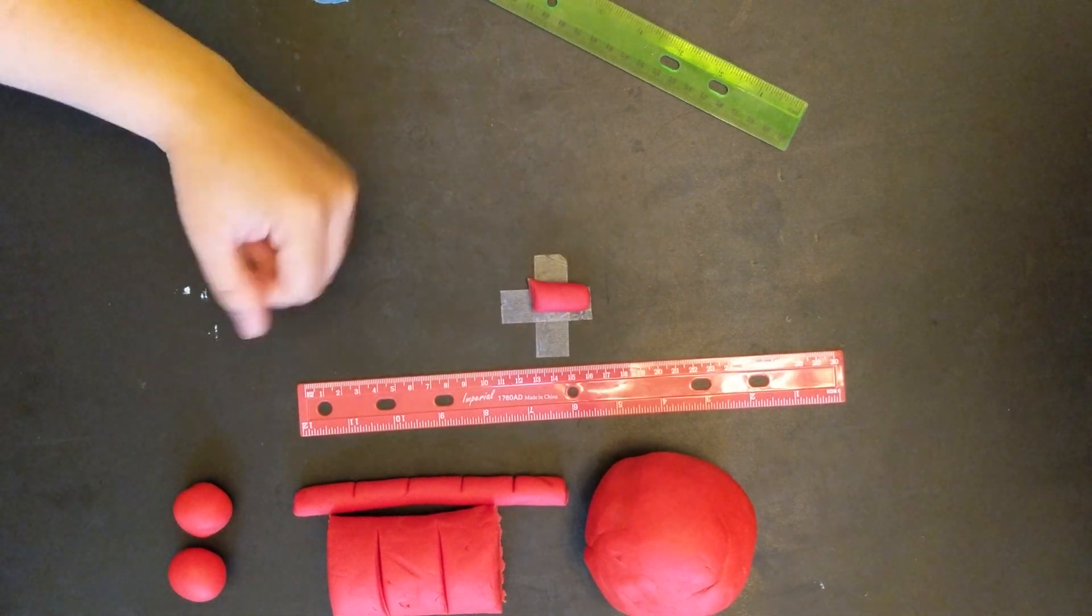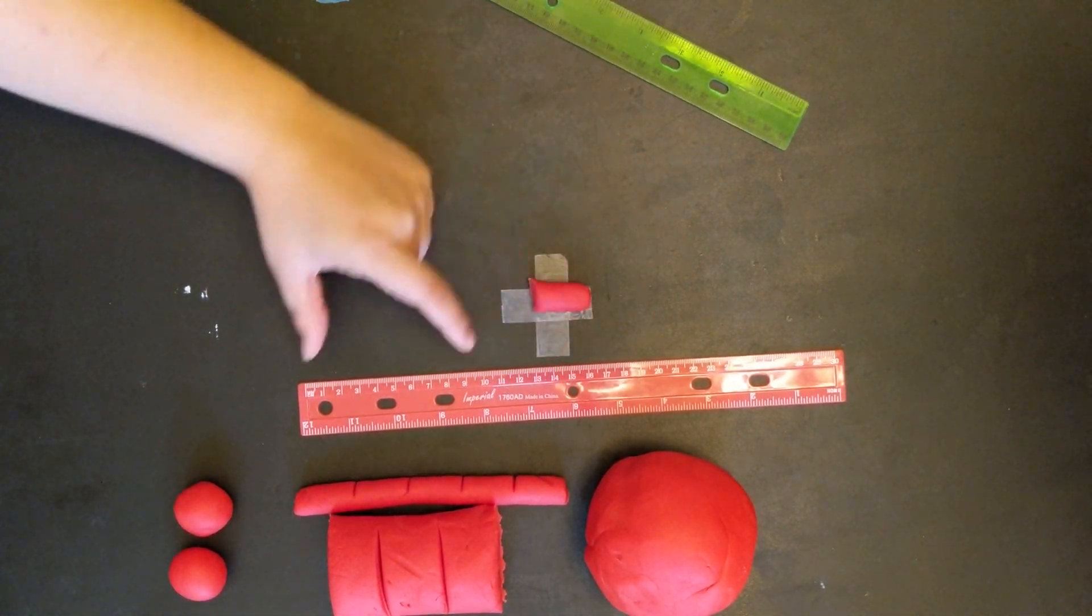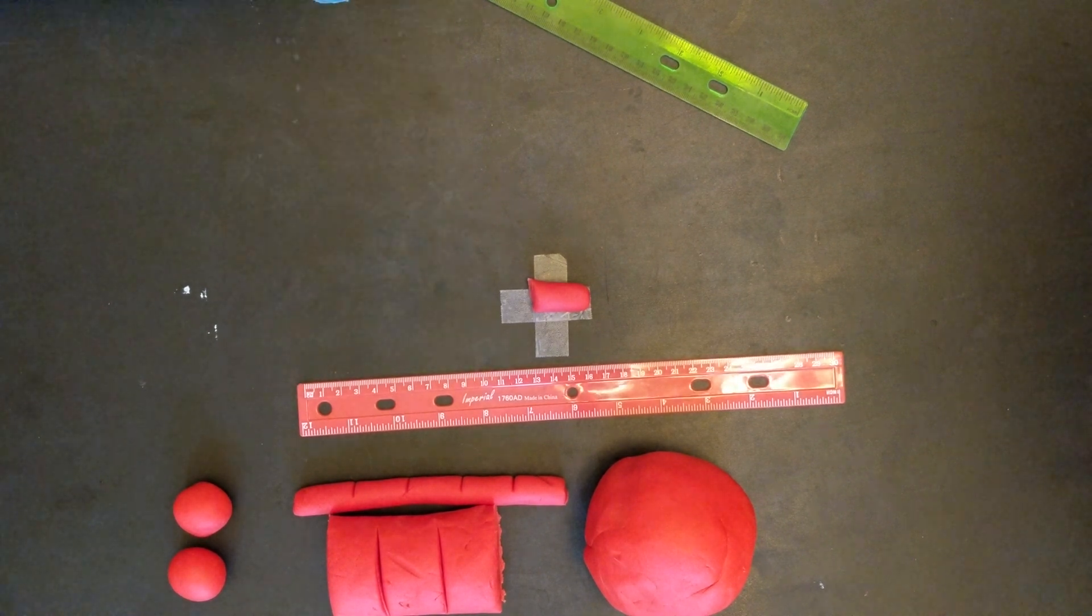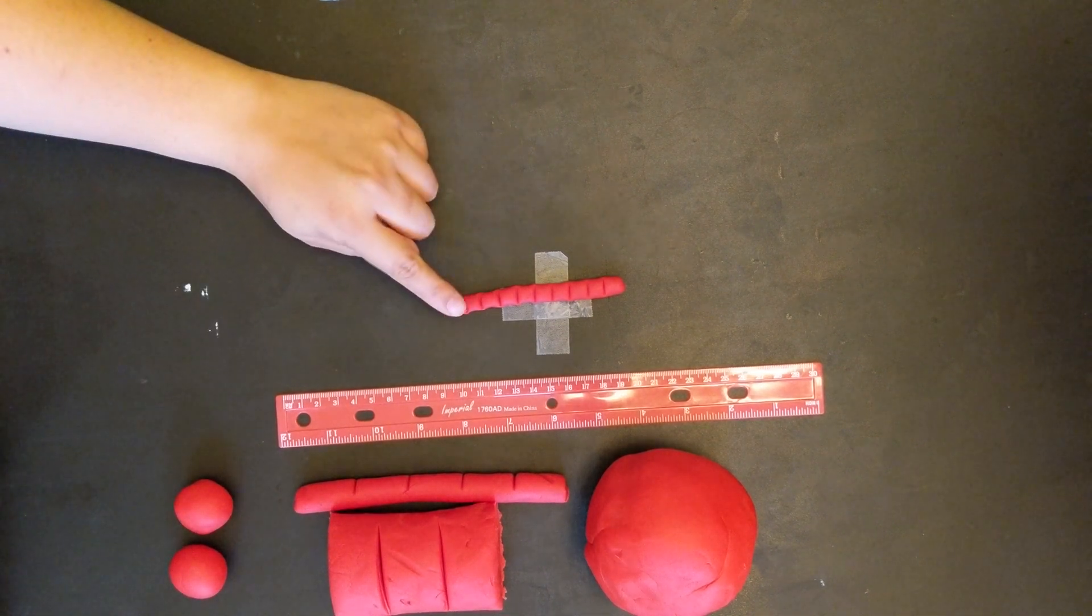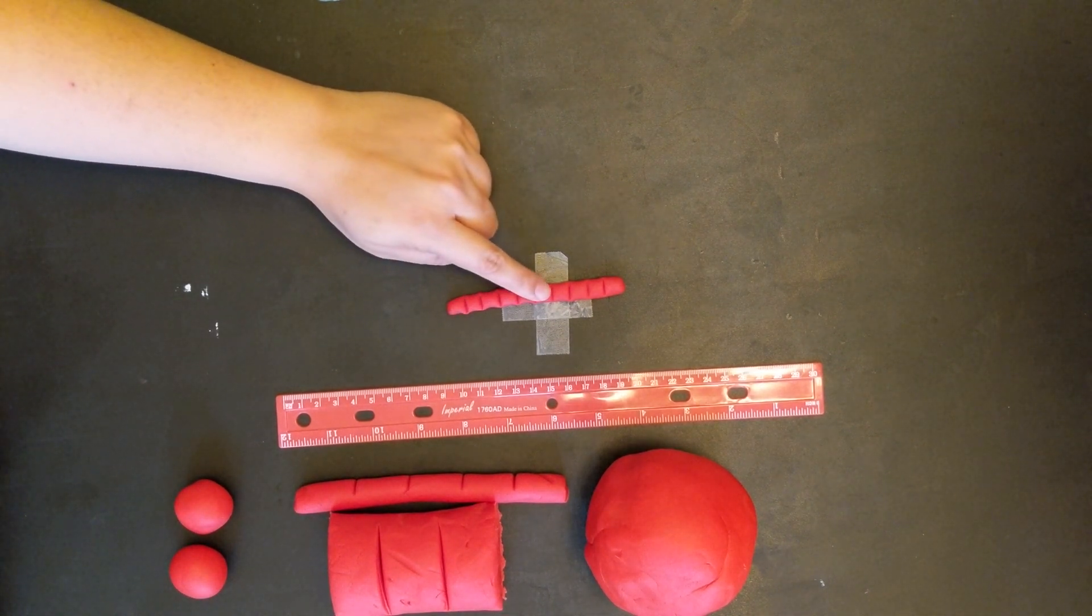With the remaining piece, you're going to roll it out again, but only till 10 centimeters this time. You will then cut it at every centimeter in order to make 10 pieces again. You're going to take nine of those pieces and add it to Saturn.